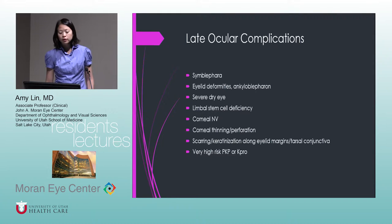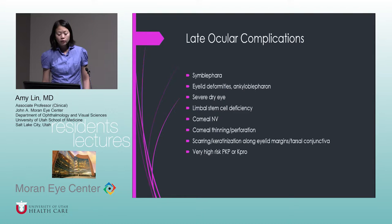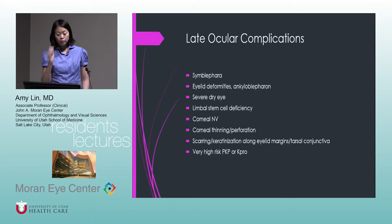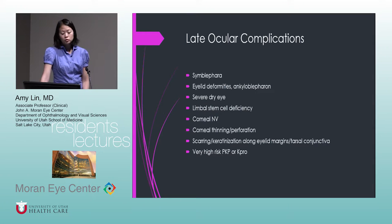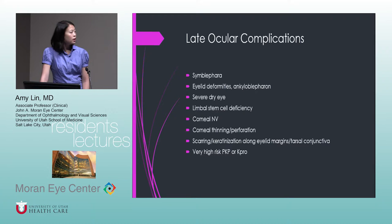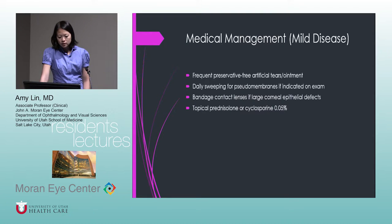Patients will also have epithelial sloughing of the eyelids and lash loss. The late ocular complications are what we really fear — extensive symblepharon formation, eyelid deformities, ankyloblepharon where eyelids are almost fused together, very severe dry eye from destruction of goblet cells and meibomian glands, limbal stem cell deficiency, corneal neovascularization that can lead to thinning and perforation, keratinization along the eyelid margins, and scarring of tarsal conjunctiva. Transplants in these eyes are very high-risk.